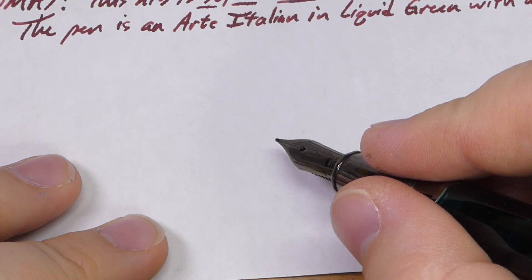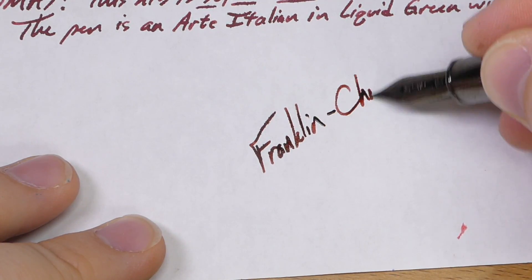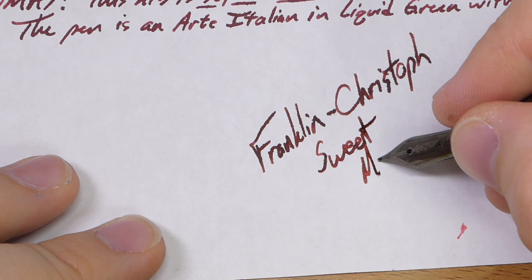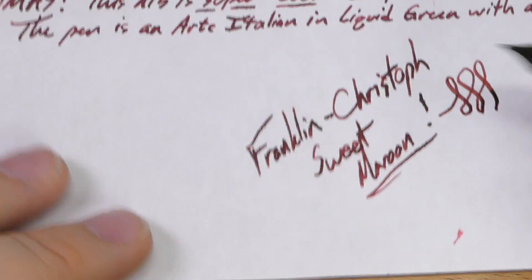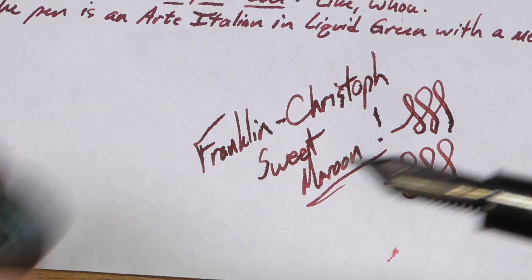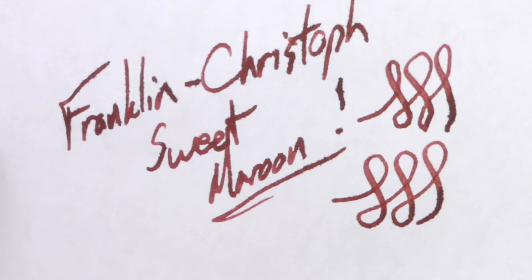Let's do a little quick writing sample just because I happen to have it here. Let's go ahead and do it with this Omos. This is Franklin Christoff's Sweet Maroon. Full disclosure, I was writing off to the side so I could get around my tripod. This is not the ideal setup. You can see definitely a lot of feathering from this nib, but that's expected.